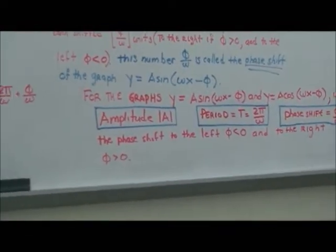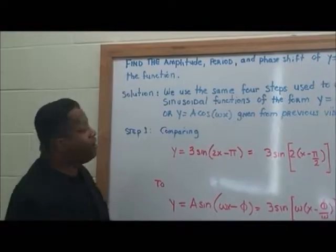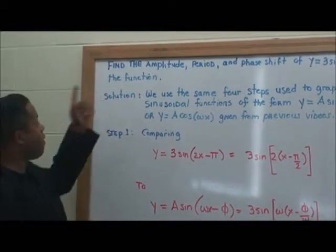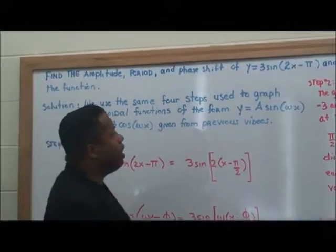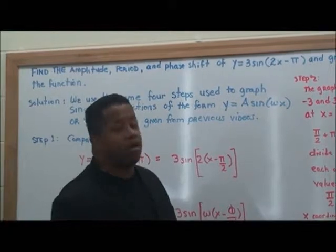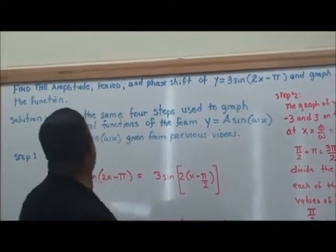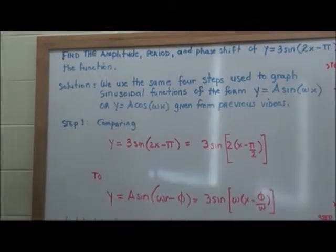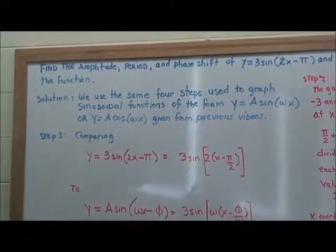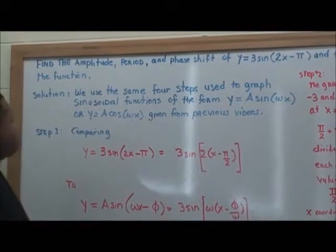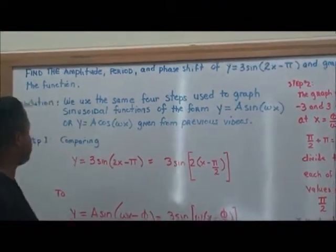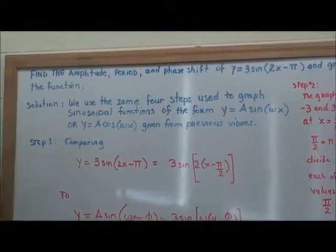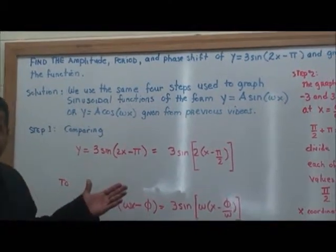Now let's look at an example. We want to find the amplitude, period, and phase shift of y equals 3·sine(2x minus π), and graph the function. We'll use the same four steps from previous videos used to graph y equals A·sine(ωx) or y equals A·cosine(ωx).